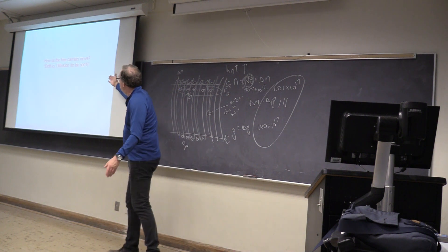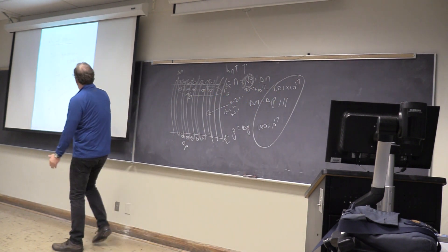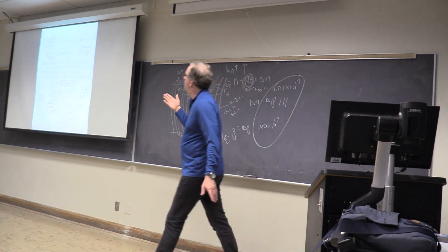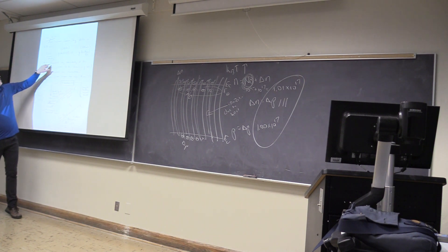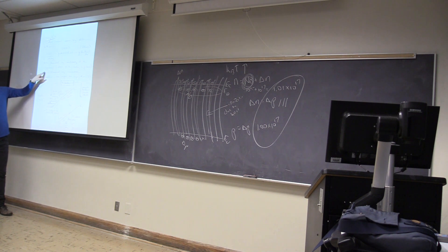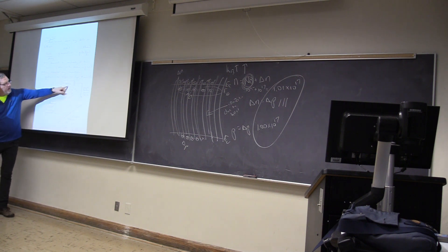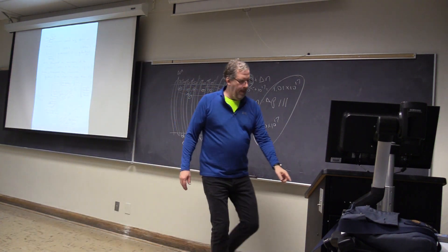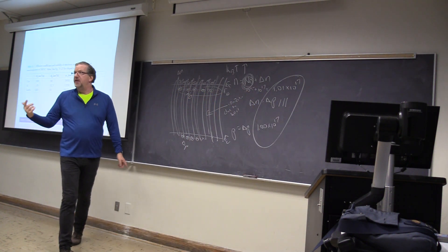So then the last thing is, how do the carriers move? It's drift and diffusion. Drift is by electric field - bands tilt and they move as a function of the electric field driving it. The key points: most current moves by drift or diffusion. Drift is driven by electric field and is dominated by the availability of free carriers. Diffusion is dominated by the concentration gradient. So the higher the slope, the more the current.